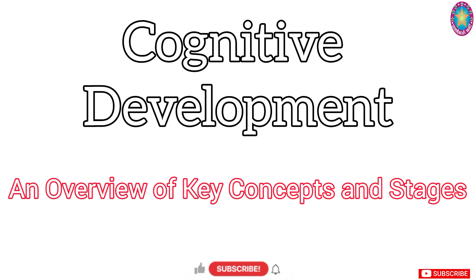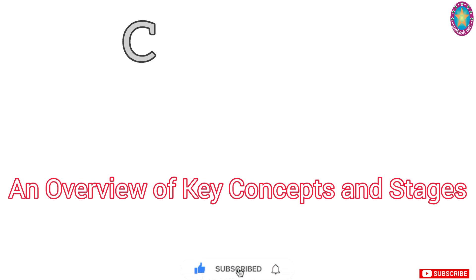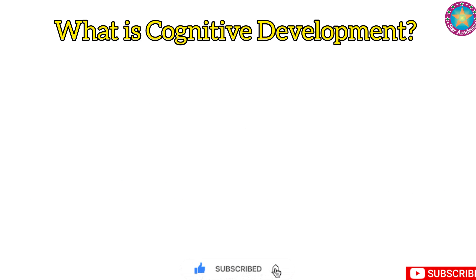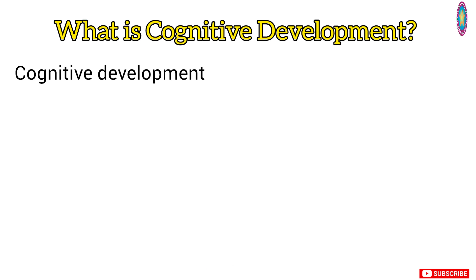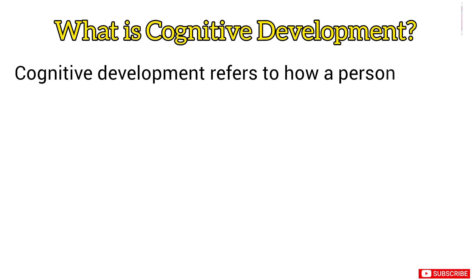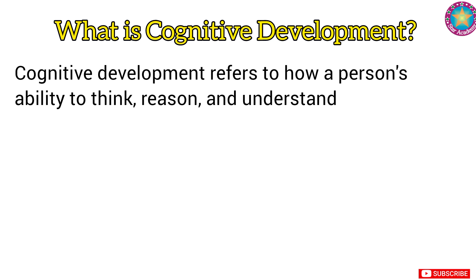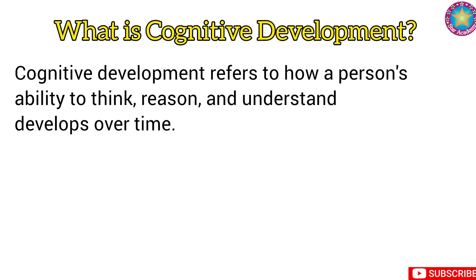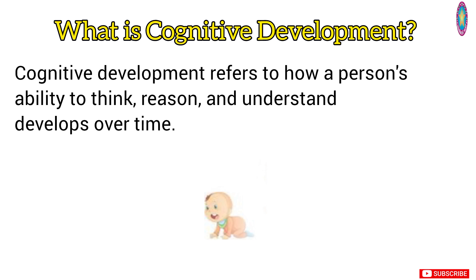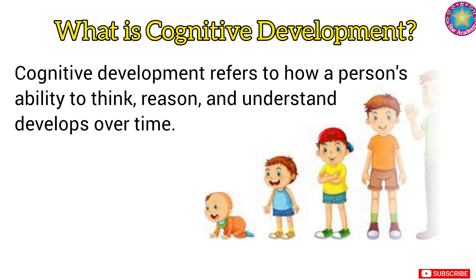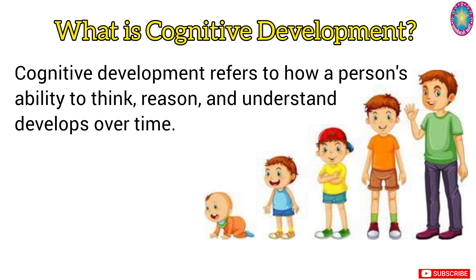Hello, once again, a very warm welcome to Star Academy. Today we will explore cognitive development. Cognitive development refers to the way our thinking, problem-solving, and understanding of the world evolve over time. It's a critical part of human growth and is closely linked to how we learn, process information, and make decisions.